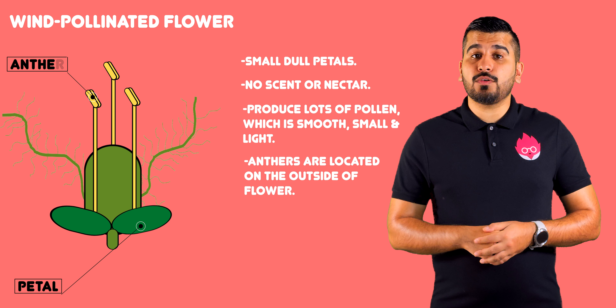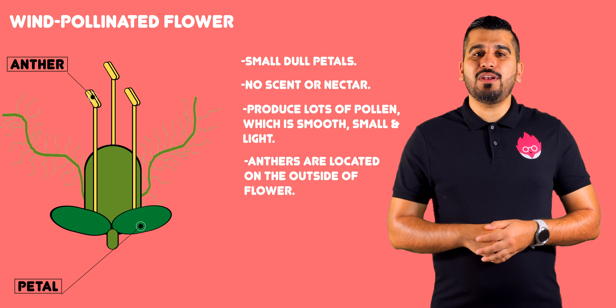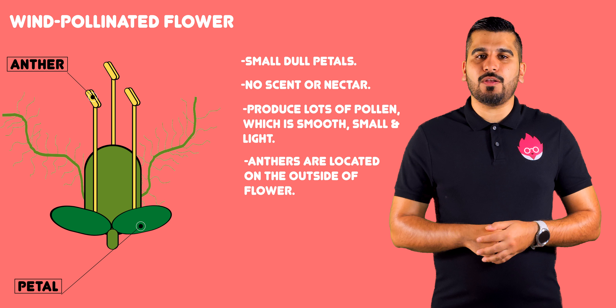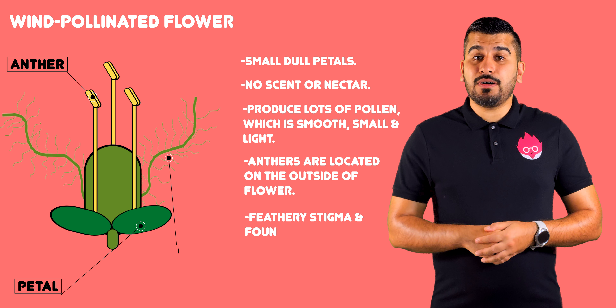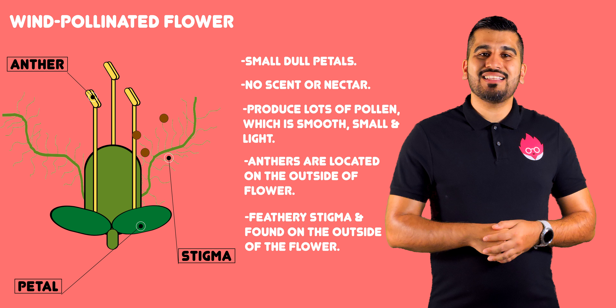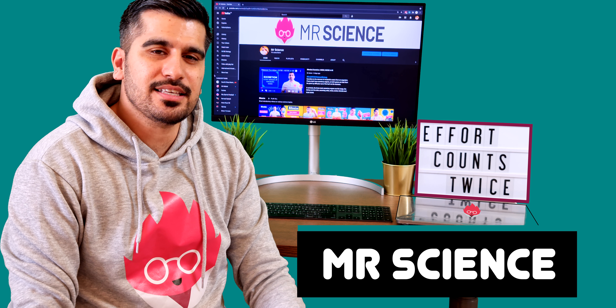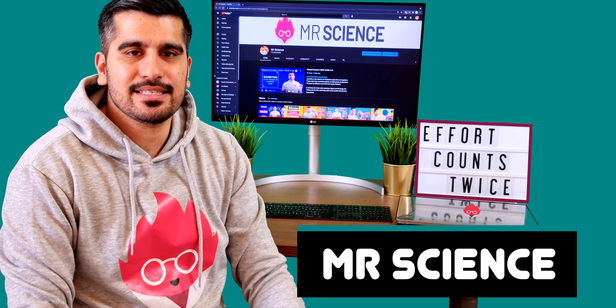Anthers are found on the outside of the flower so the pollen can easily be lost. The stigma is feathery and found on the outside of the flower to catch pollen.